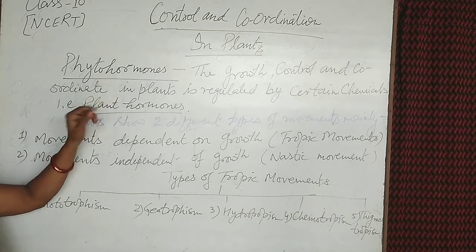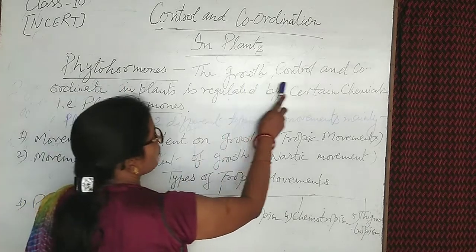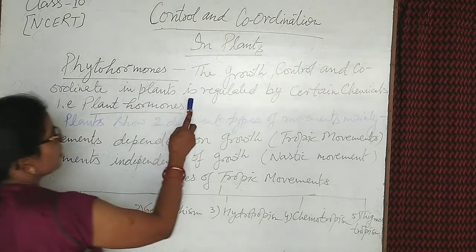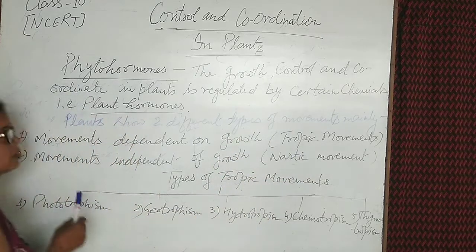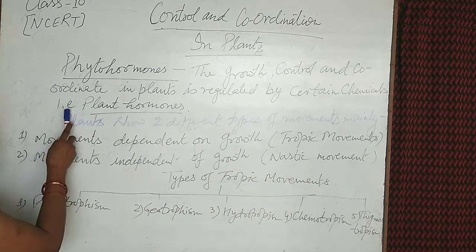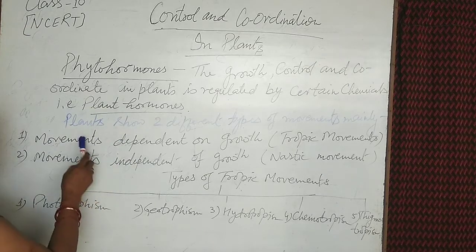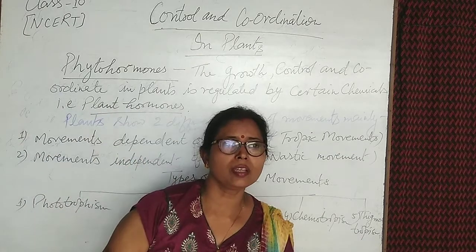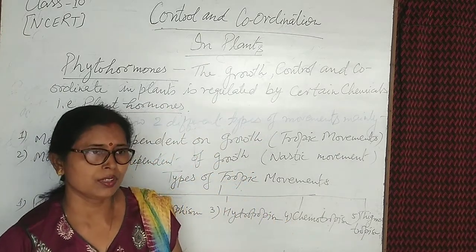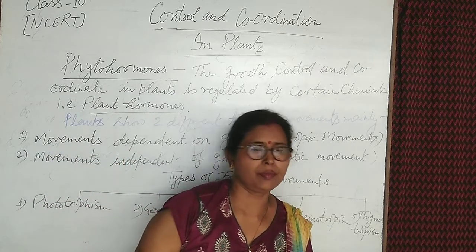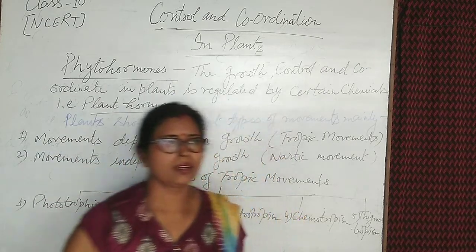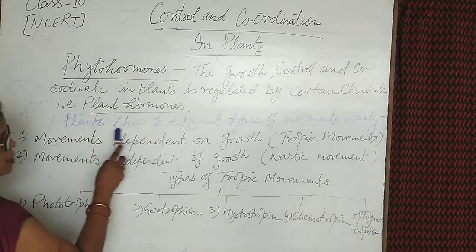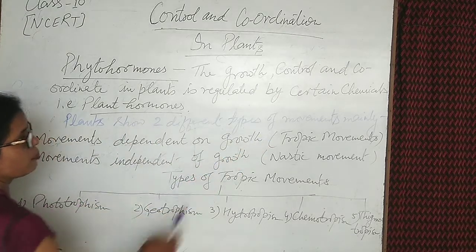Phytohormones are the most important term. Growth control and coordination in plants is regulated by certain chemicals, that is plant hormones. Hormones act as chemical messengers, and plants show two different types of movement mainly.